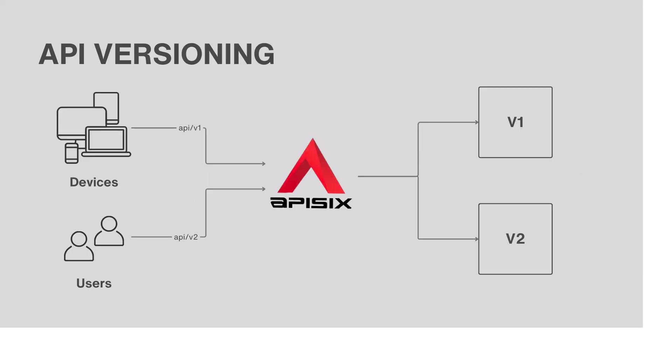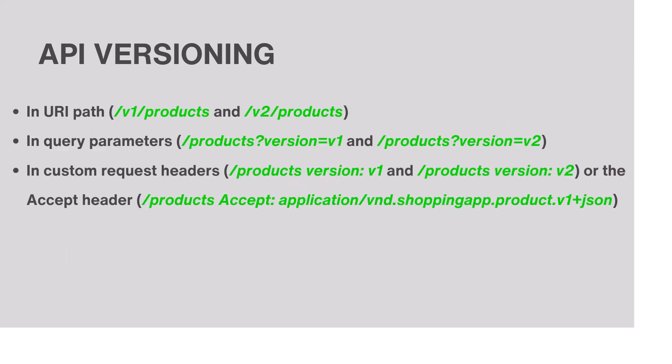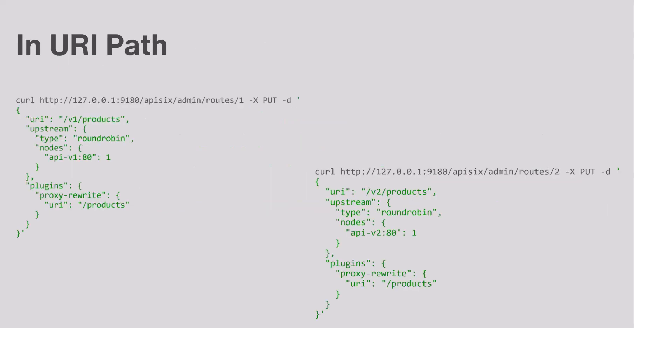There is no doubt that every minor change can potentially break your client applications. API versioning is a more straightforward strategy to make changes to your APIs without disrupting client applications. By versioning, you can let your clients decide whether to upgrade to the new API version and update their application at their own pace. API gateways like APISIX can handle typical scenarios where clients specify which version of the API to use in their requests — via URI paths, query parameters, or custom headers.